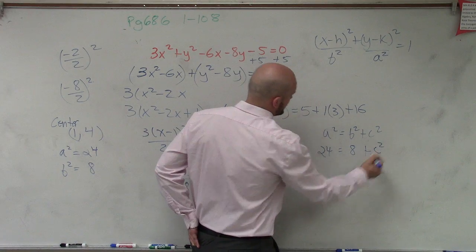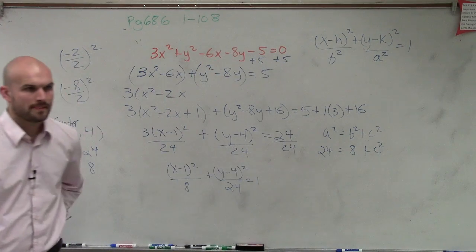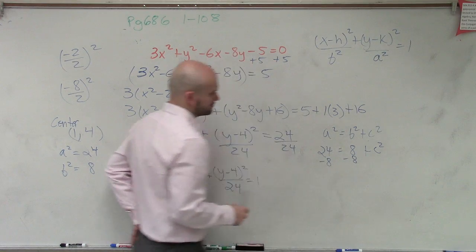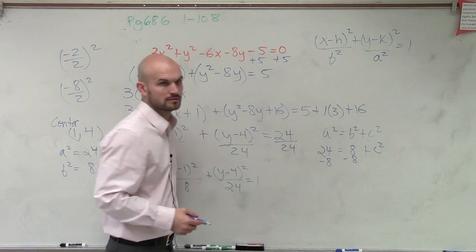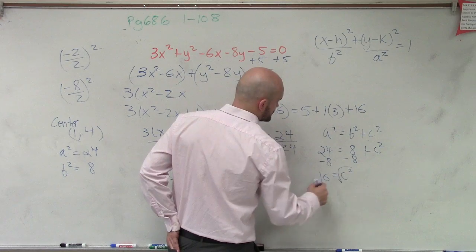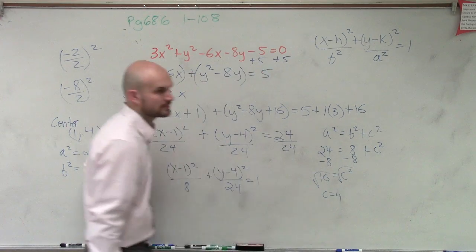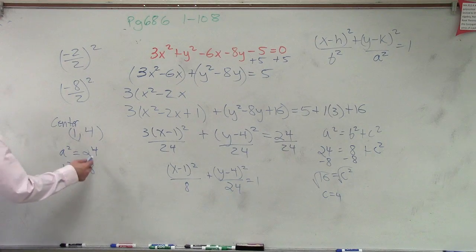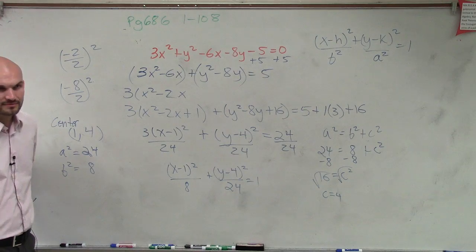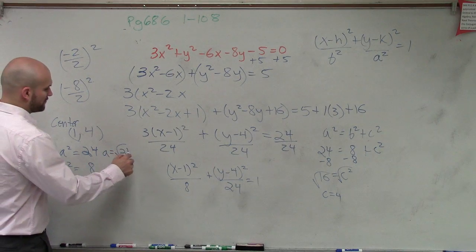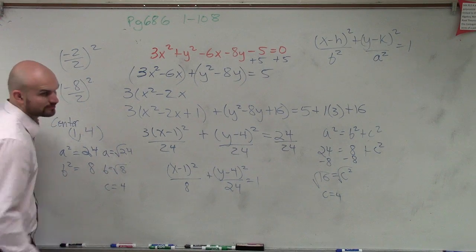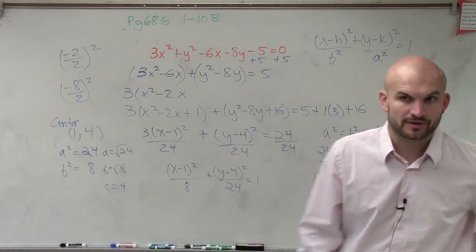So 24 equals 8 plus c squared. We subtract 8, giving us 16 equals c squared. Take the square root: c equals 4. So a equals the square root of 24, b equals the square root of 8, but c equals 4. We're going to have to approximate for a and b as we graph it.